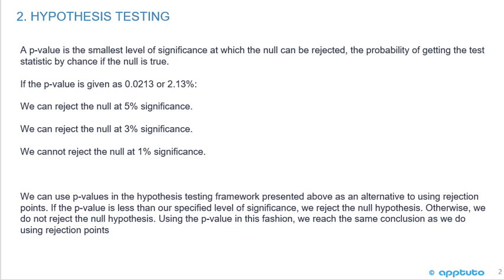2.13% was less than 5%, so we rejected the null hypothesis. 2.13% was less than 3%, so we could reject the null hypothesis. However, 2.13% was greater than 1%, so we could not reject the null hypothesis.